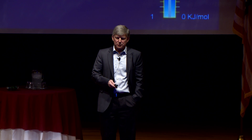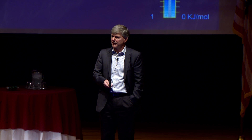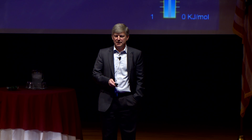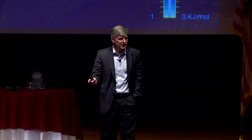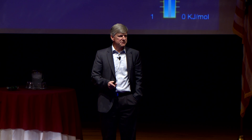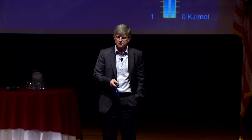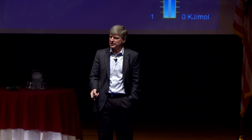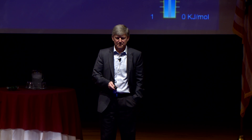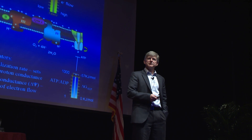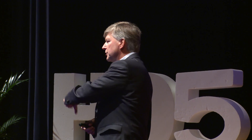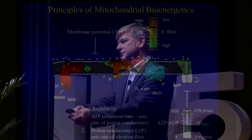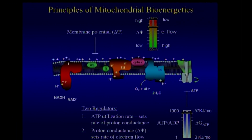This ATP to ADP gradient is what is used by all of those systems to support a cell energetically. You should now be recognizing that there are a couple of regulators on this system. One is the rate of ATP utilization, because that determines the rate at which protons are coming through the ATP synthase. The second regulator is the membrane potential, because that regulates the rate at which electrons are flowing through the system and therefore the rate at which electrons are being pulled through the pathways of metabolism.